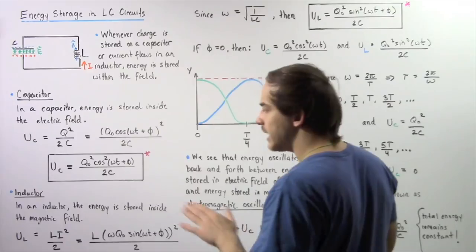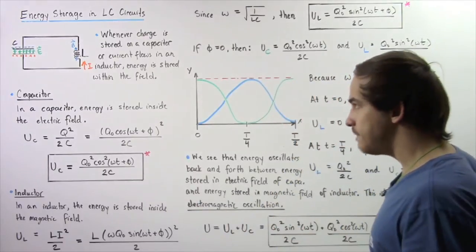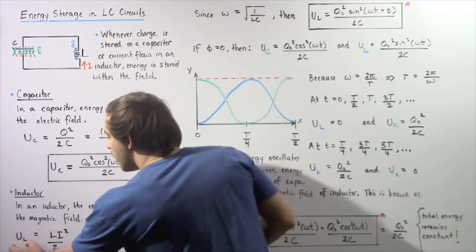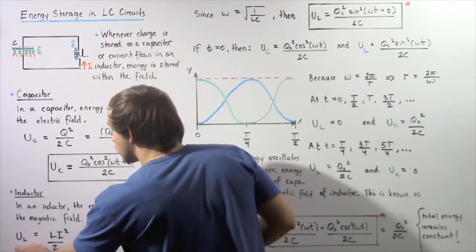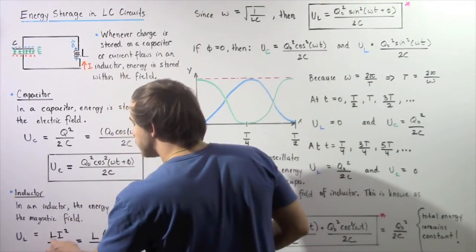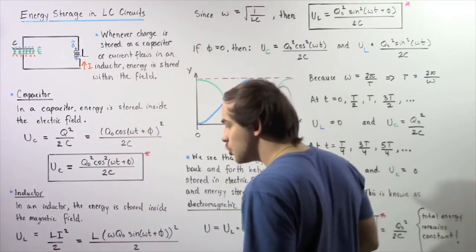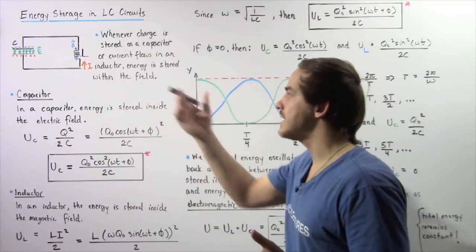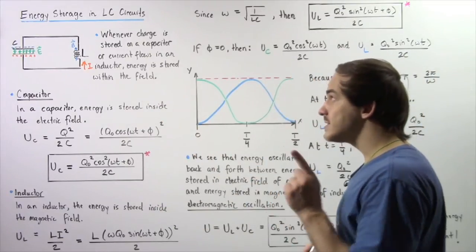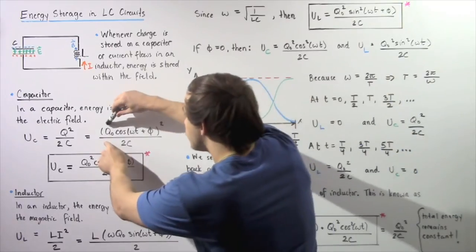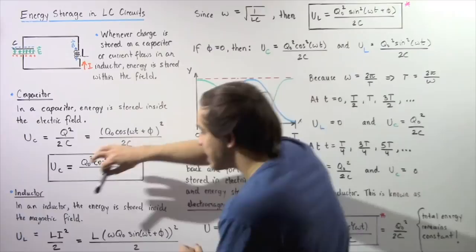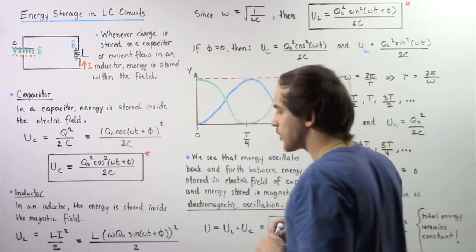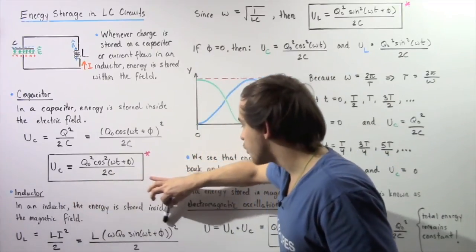Now let's move on to the inductor. In an inductor, the energy is stored within the magnetic field. From our discussion on energy storage inside inductors, the amount of energy stored inside the inductor is equal to L multiplied by I squared divided by 2, where I is the electric current with respect to time and L is our inductance. Recall that in the lecture on LC circuits, we showed that I is equal to a corresponding equation, so let's replace I with that equation.